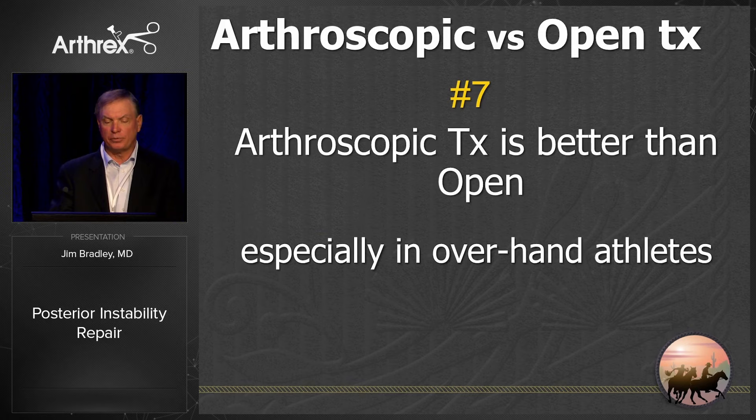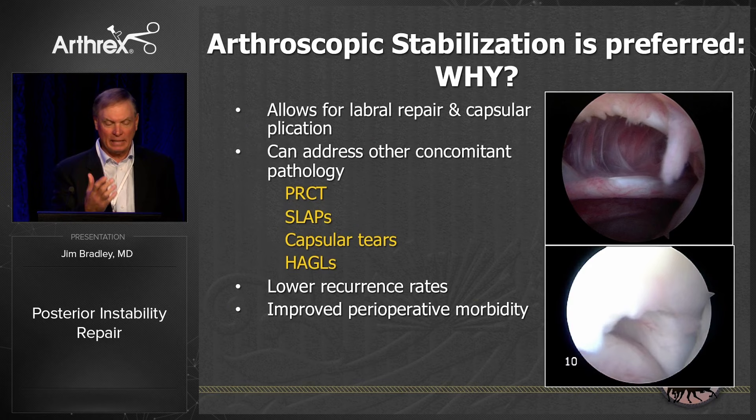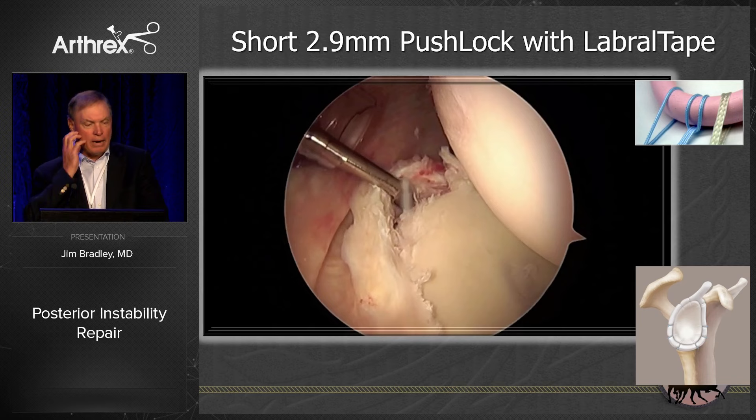Regarding arthroscopic versus open: arthroscopic treatment is better than open, especially in overhead throwers. Arthroscopic stabilization allows treatment of concomitant pathology — partial cuff tears, SLAP lesions, capsular rents, and Hill-Sachs lesions. In the literature overall, arthroscopy has lower recurrence rates and improved perioperative morbidity.